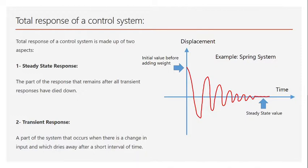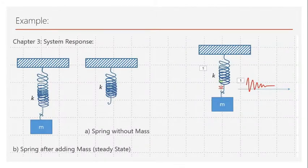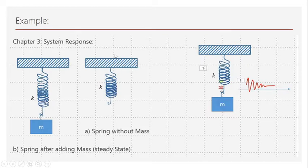Transient response is a short-term or temporary response that we can expect from a system. We have one example here: imagine we have a spring with a constant k, and as you can see in this picture, this spring is attached to a surface — for example, a ceiling or an object that is not moving.